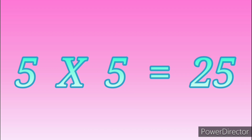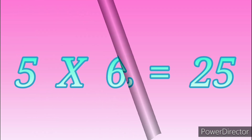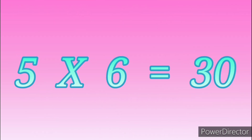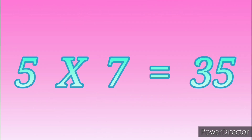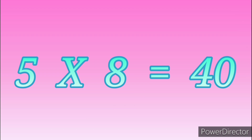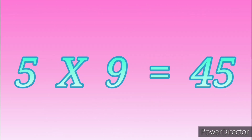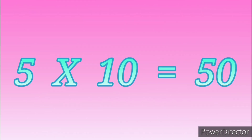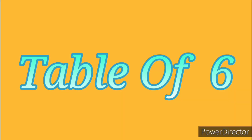5 fives are 25. 5 sixes are 30. 5 sevens are 35. 5 eights are 40. 5 nines are 45. 5 tens are 50. Table of Six.